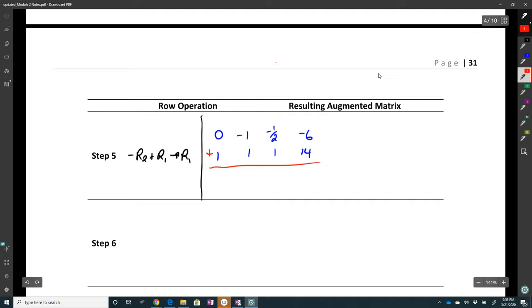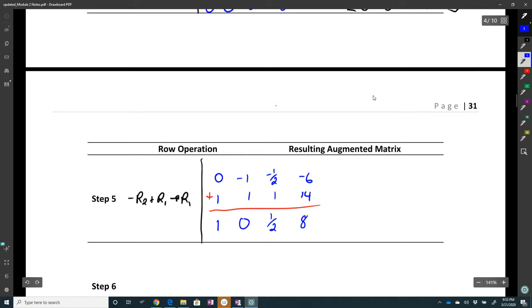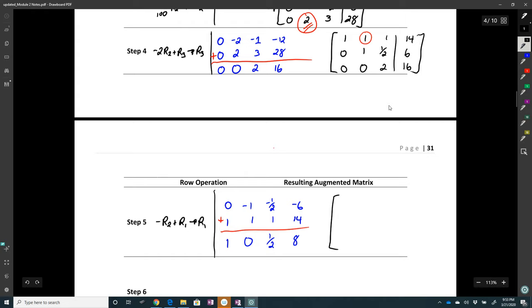So I have one, zero, one half, eight. Zero, one, one half, six. Zero, zero, two, sixteen. Okay. Now I can work on column three.